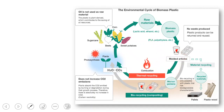Through biorecycling or composting, bioplastics can be made into manure and used as plant fertilizers for growing plants again. This makes bioplastics carbon neutral, reducing carbon emissions to the atmosphere and reducing the effect of carbon dioxide on global warming. Bioplastics do not increase carbon dioxide emissions.